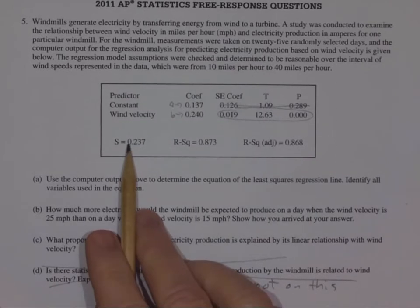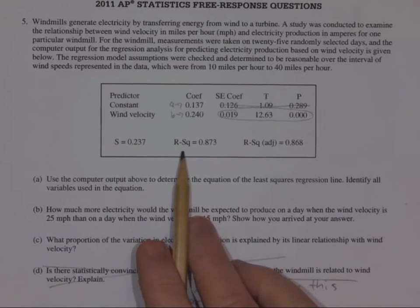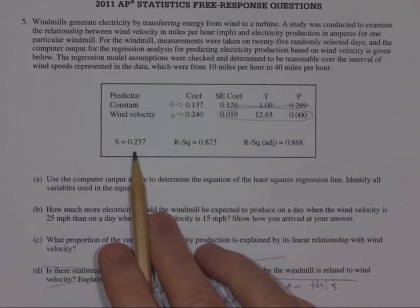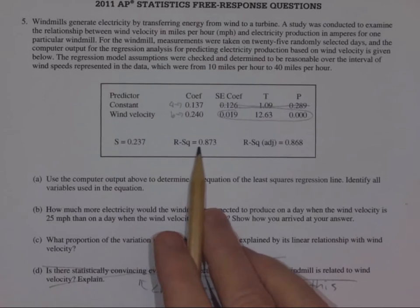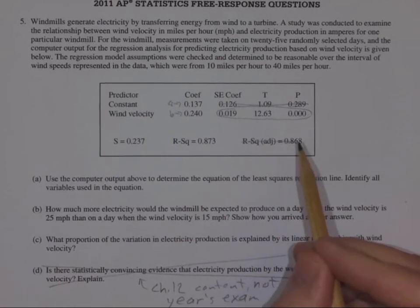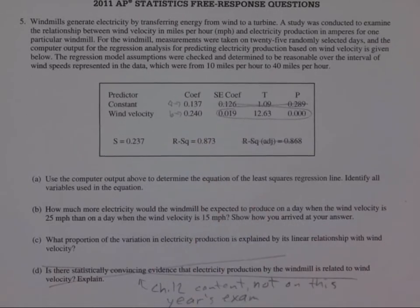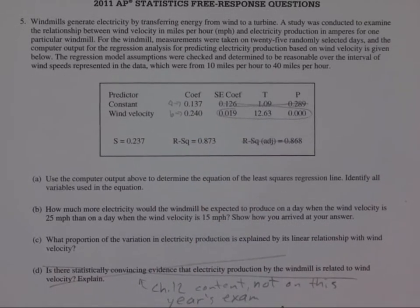Then we have S. And so that is the standard error about the line. In other words, it is in essence the standard deviation of the residuals or the average of the residuals. And there's R-squared. And R-squared adjusted, we will never use. So these are the four numbers you've got to be able to work with when you're given one of these computer printouts.